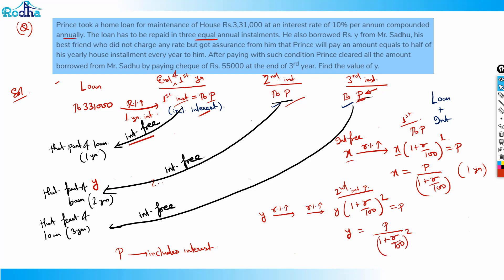Similarly for the third installment, the interest-free value z = P / (1 + r/100)³. And the total loan amount equals x + y + z, i.e., the sum of all interest-free values, because those are the parts of the loan that together add up to the total loan — cleared by paying three installments.